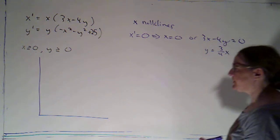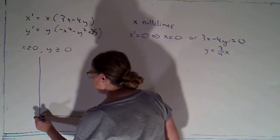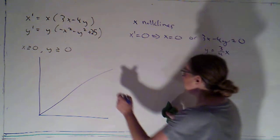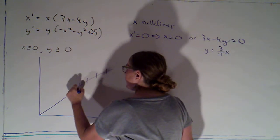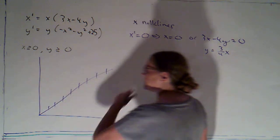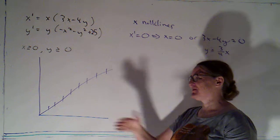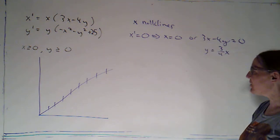Alright, if y is equal to 3 fourths x, that's just a line of slope 3 fourths through the origin. And here I can draw in that I will have vertical tangents. And once we've drawn in our y nullclines, we can take a look at are we going up or are we going down at those points.